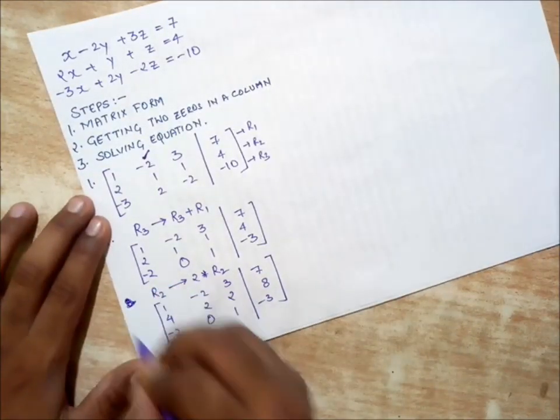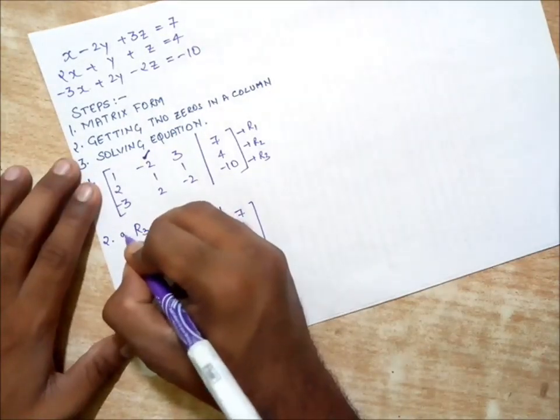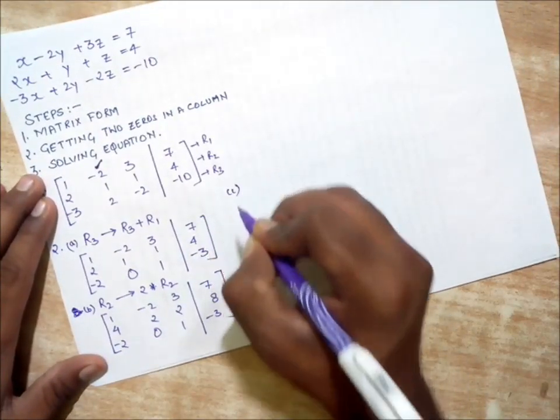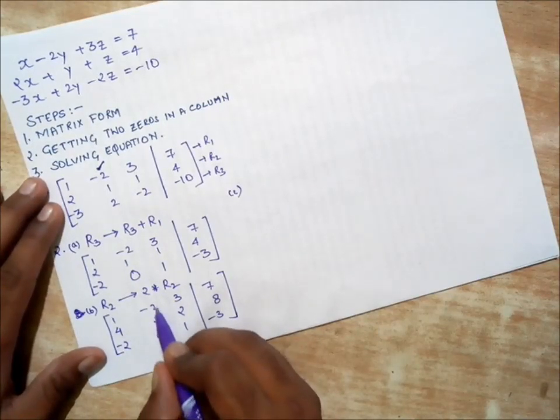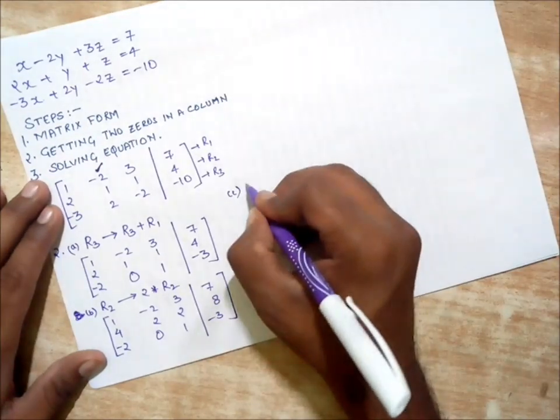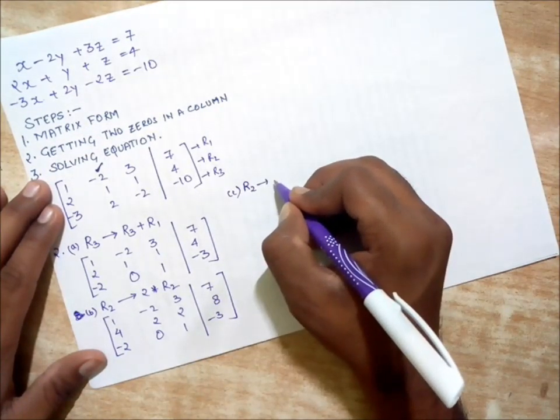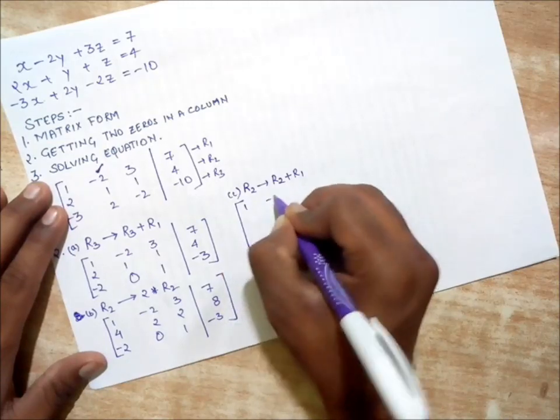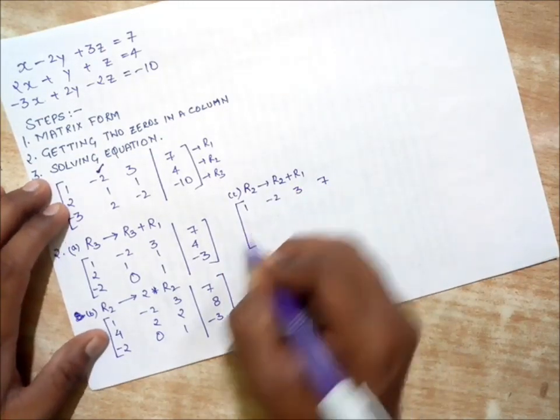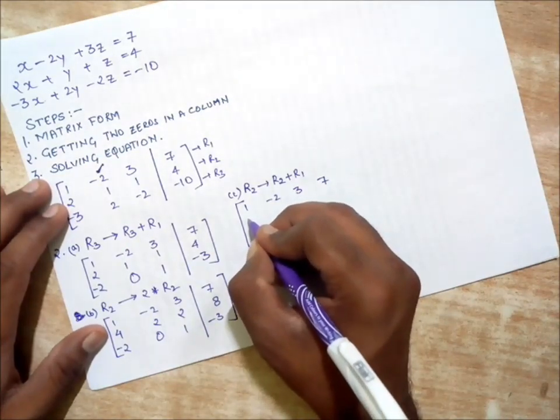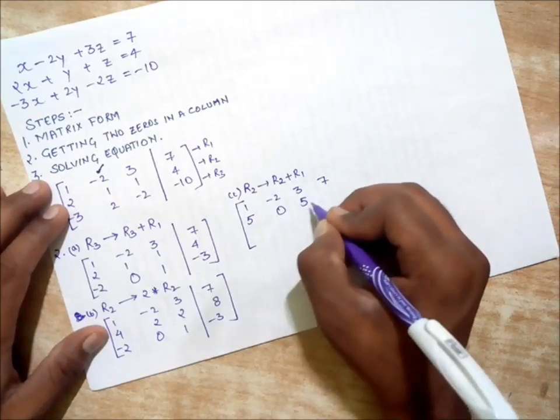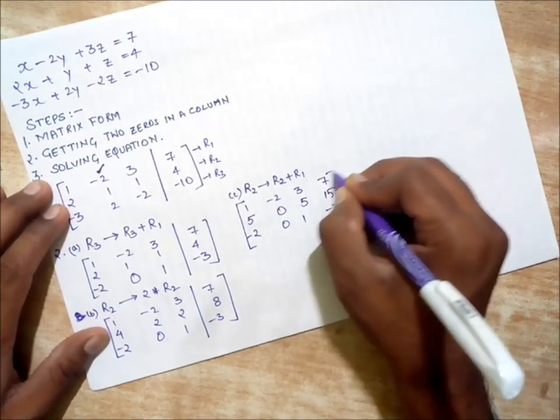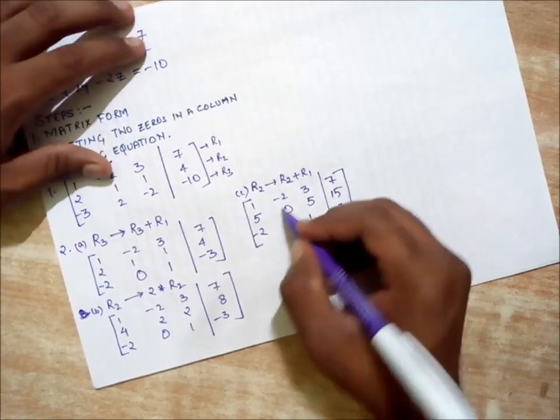This is just step number two continuing. Let's move on to the next part. R2 is going to be R2 plus R1. Our first row is going to remain the same. Row two adds up with the elements of row one, so it would be 5, 0, 5, and 15. Row three: -2, 0, 1, -3. As we can see, we got two zeros, so step two is confirmed.